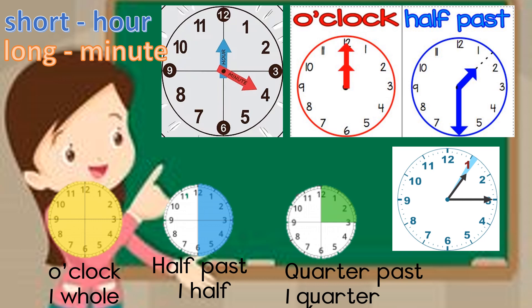One quarter of that clock has been coloured in. If you were the minute hand, you were standing on the 12 and you went all the way to the 3, you would have travelled a quarter of the way. That's why when the long hand is on the 3, we say it is quarter past the hour.